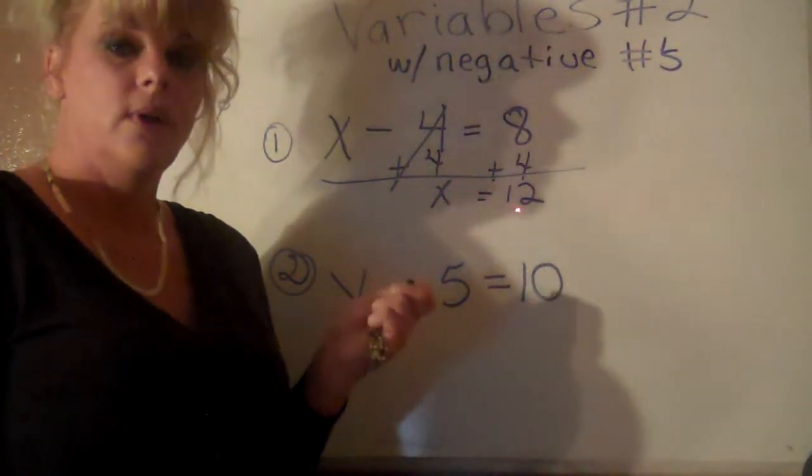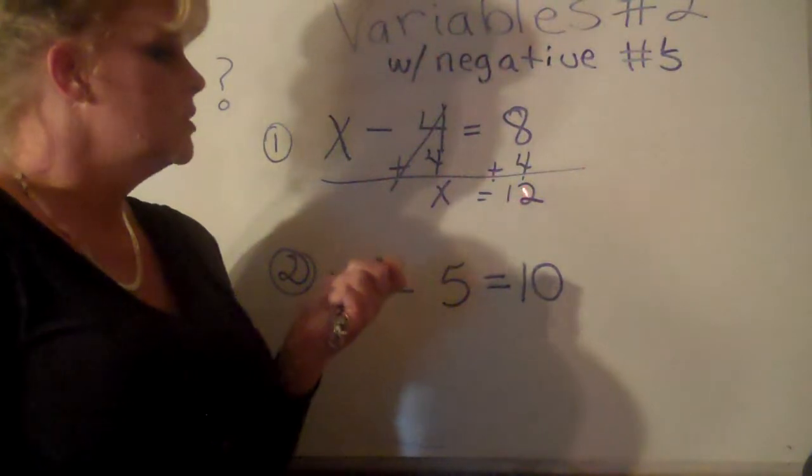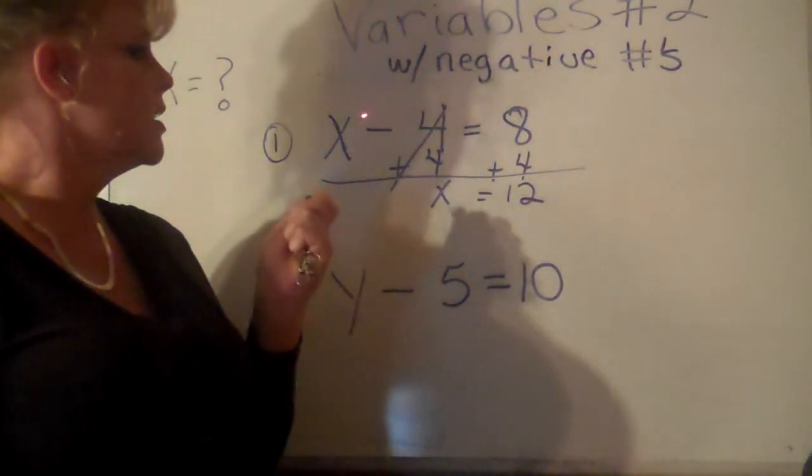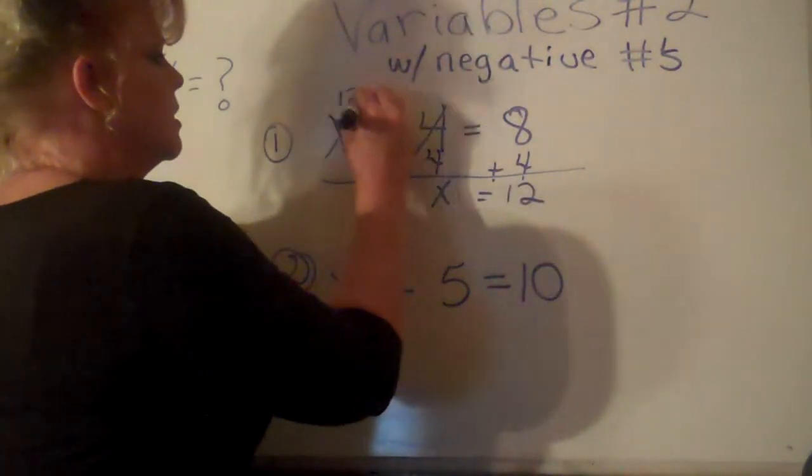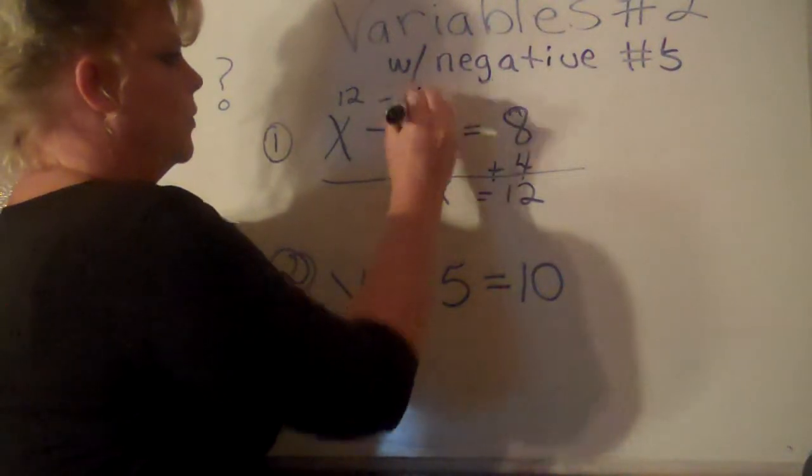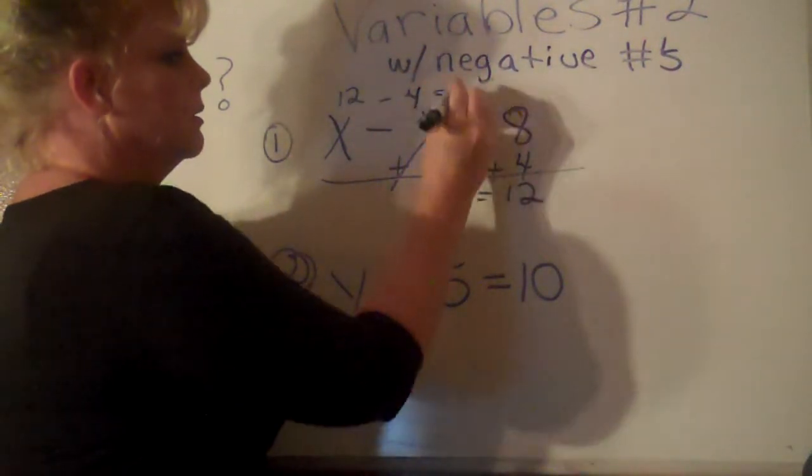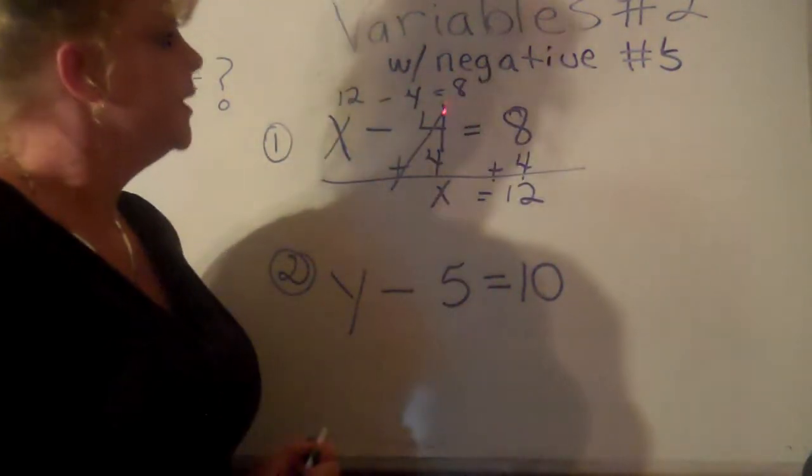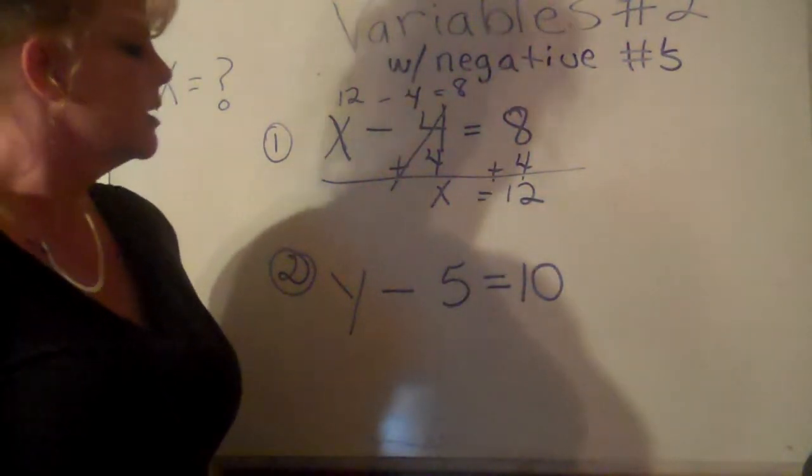x equals 12. So all you have to do is take that 12 and fill it in up here: 12 minus 4 equals 8. Yeah, it looks right.